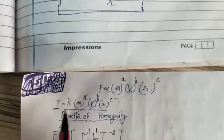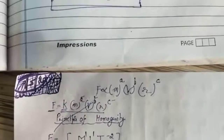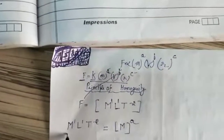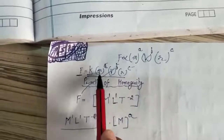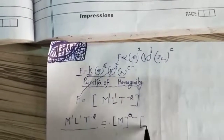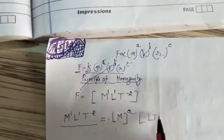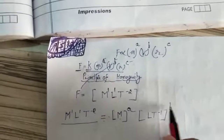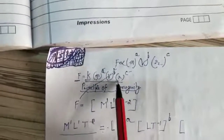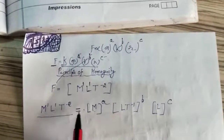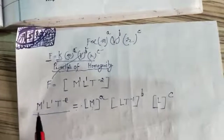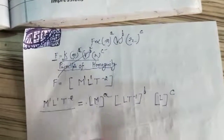So we write: M¹L¹T⁻² = k · M^a · (LT⁻¹)^b · L^c. Here k has no dimensions. Comparing the powers of M on both sides: M has power 'a' on the right and power 1 on the left, so a = 1. For L: we have L^b and L^c, giving L^(b+c) on the right and L¹ on the left, so b + c = 1.